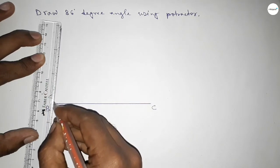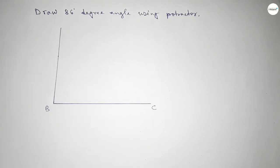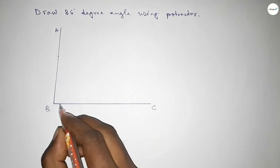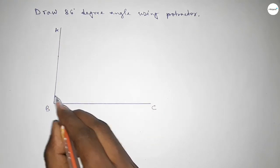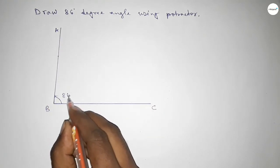Joining this and taking here point A. So, angle ABC—after this, this is 86 degrees.